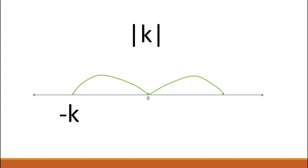So when we are solving absolute value equations, you should generally get two answers. You can use this fact, along with the idea of distance away from zero, to help you solve these problems.